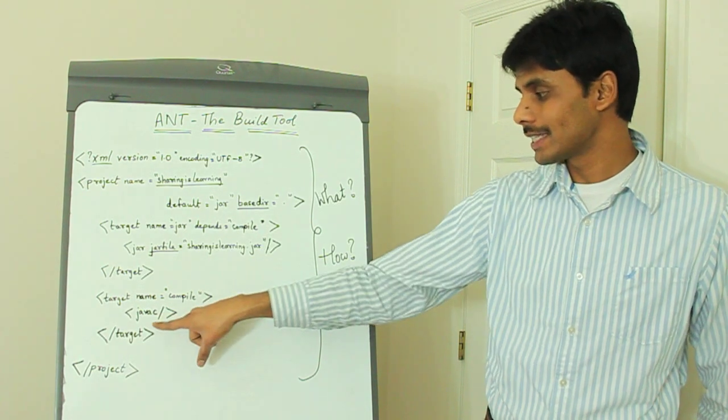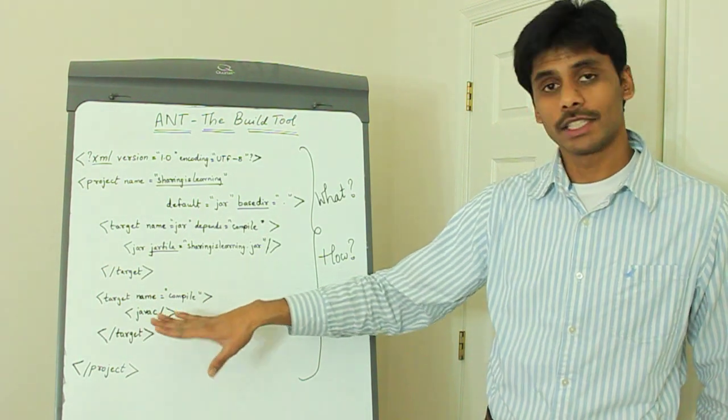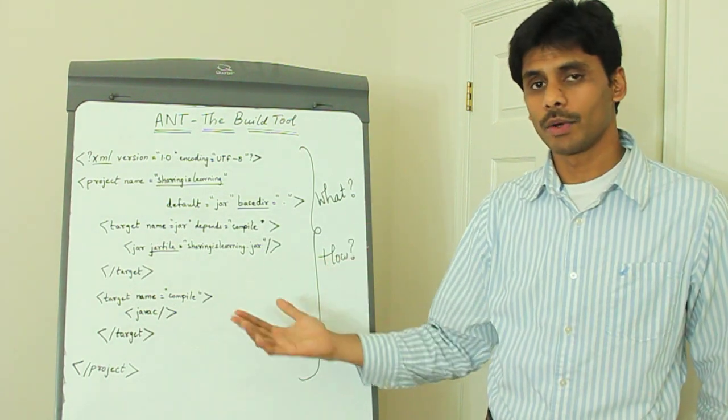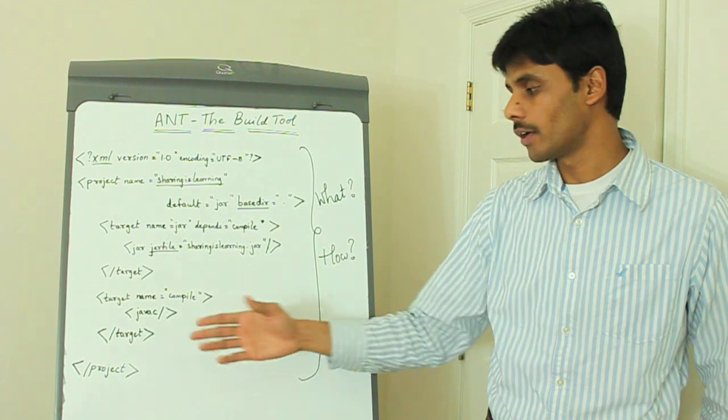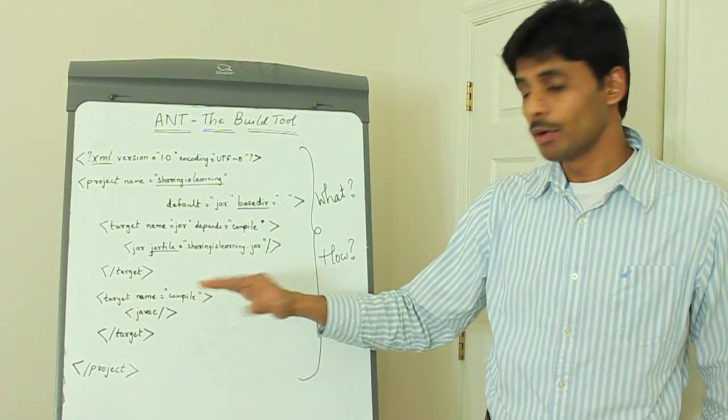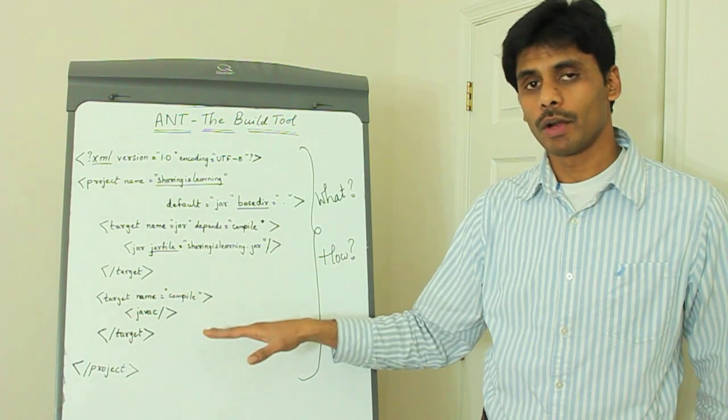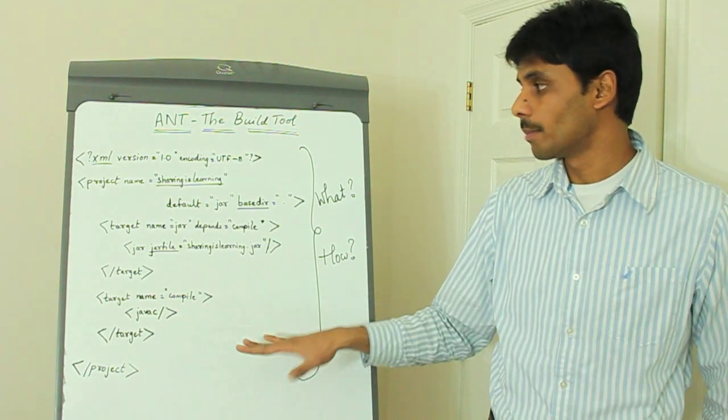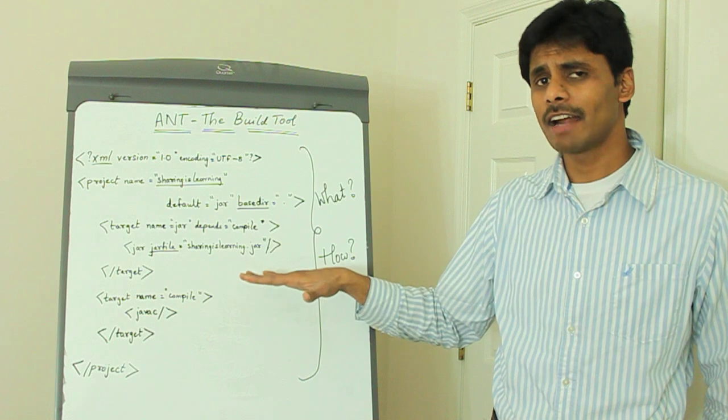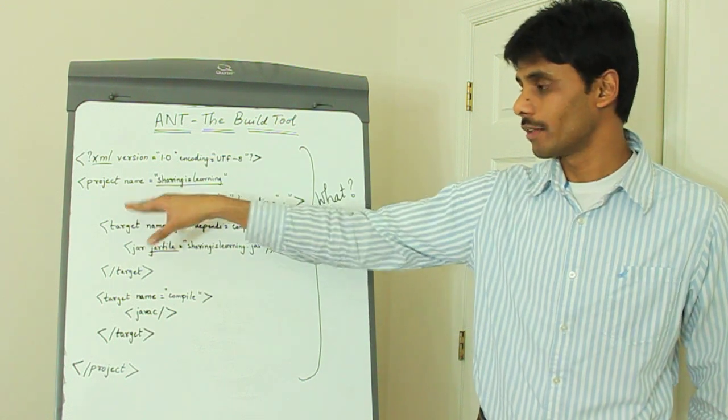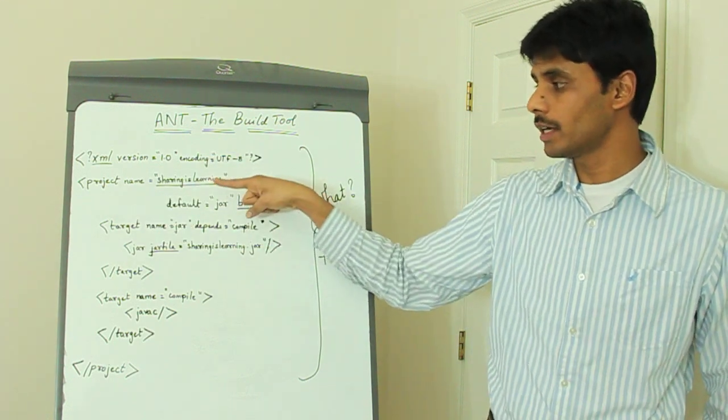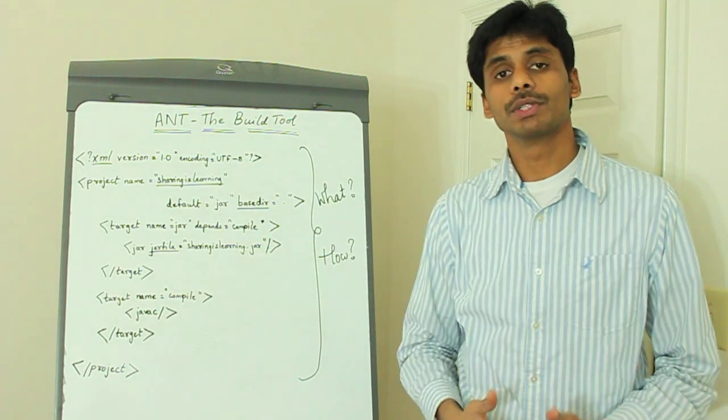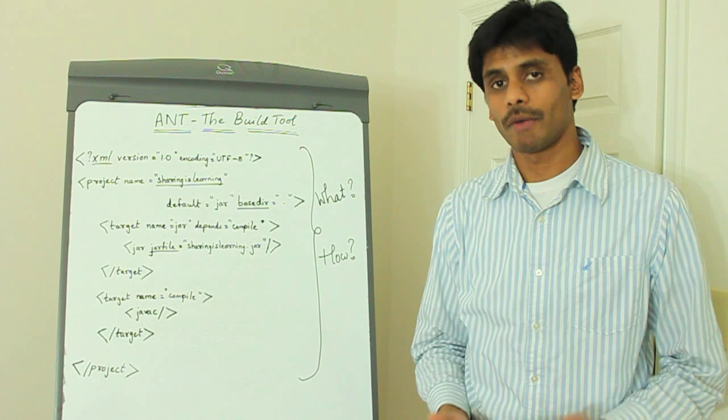For example, JavaC is an Ant task. As I said, this is just the skeleton and it doesn't have all the attributes like source directory or where to copy the output class files. But when you go to the documentation, the link for which I'll be posting on my blog, you will see additional details for each of these tasks. But at a high level, any Ant file will have the project root element, it should have the targets defined, and then within those targets, you use the tasks that Ant provides.